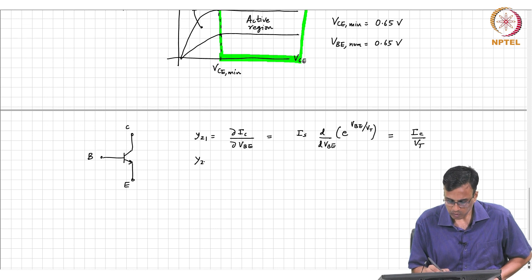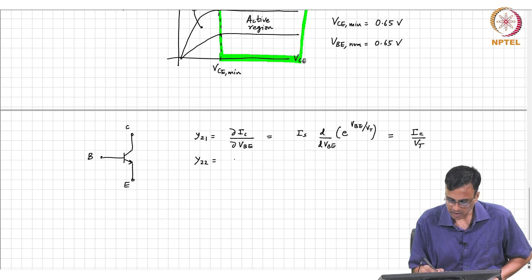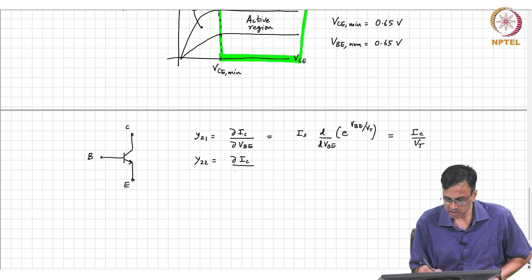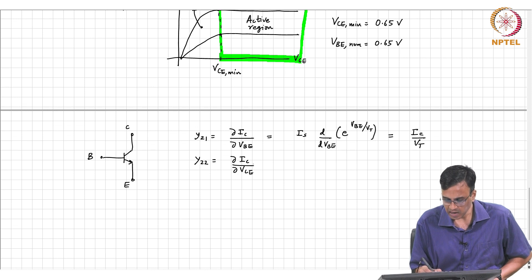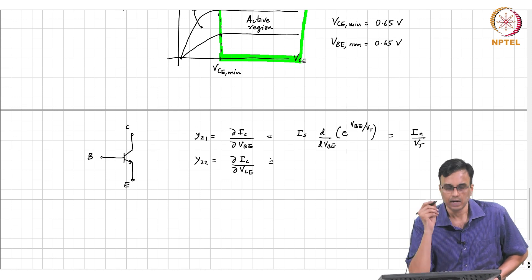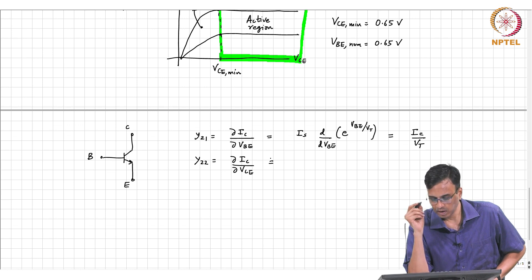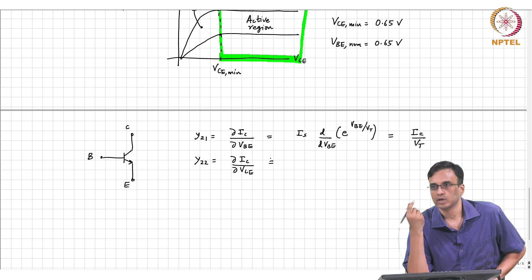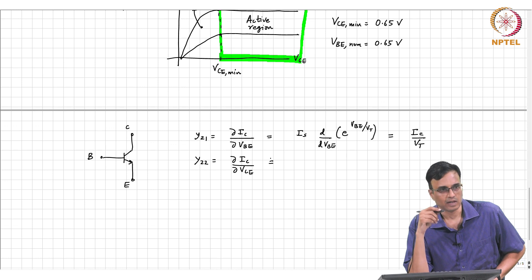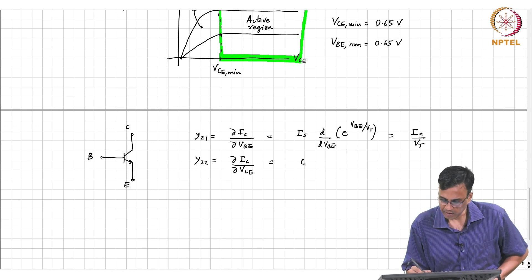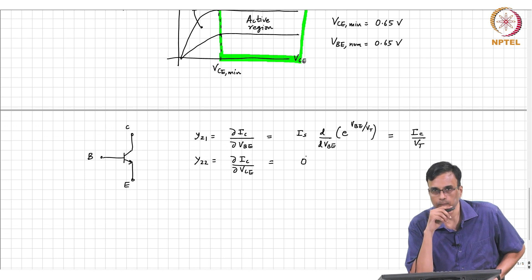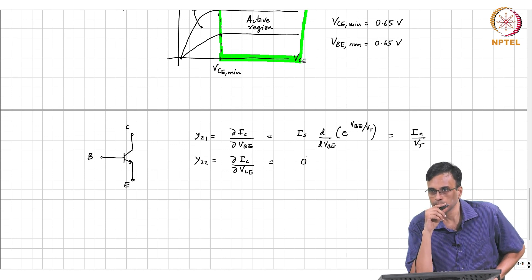What about Y22, the change in IC due to a change in VCE? In the active region, the current does not depend on the collector emitter voltage, so this is 0.